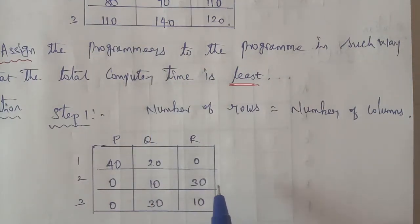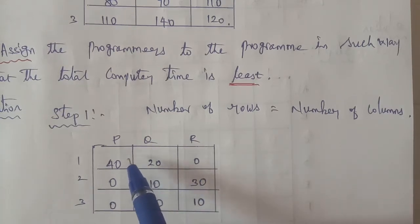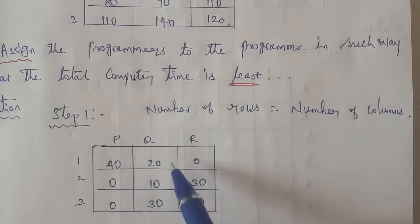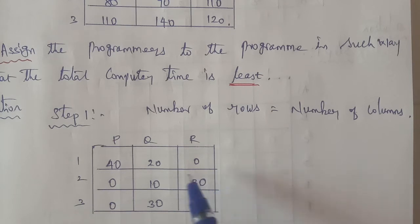Assignment problem requires at least one zero in number of rows and number of columns. Check the rows: first row has zero, second row has zero, third row has zero. Check columns: first column has zero, second column has zero, third column has zero. Therefore, at least one zero in each row and column.